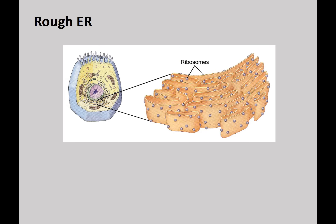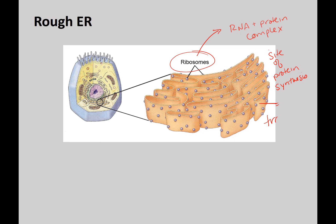Now let's switch to the rough ER, which is rough due to ribosomes — big RNA and protein complexes that are the site of protein synthesis, better known as translation. Translation is the process of reading the messenger RNA information on the ribosome and bringing in amino acids to make a protein.